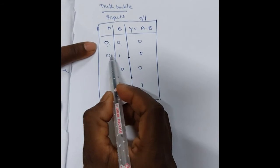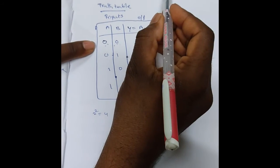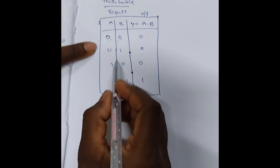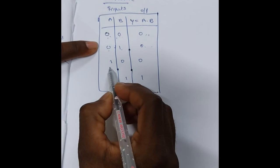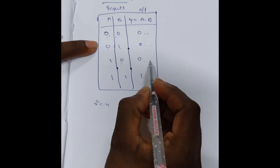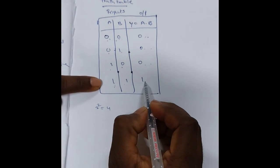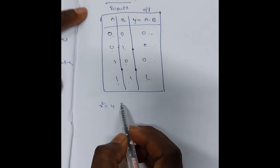For inputs 0, 0, output is 0. Y equals A dot B, that is the product of A and B. For 0, 1, output is 0. For 1, 0, output is 0. When both the inputs are 1, 1, then output is 1. That is 1 into 1 equals 1.